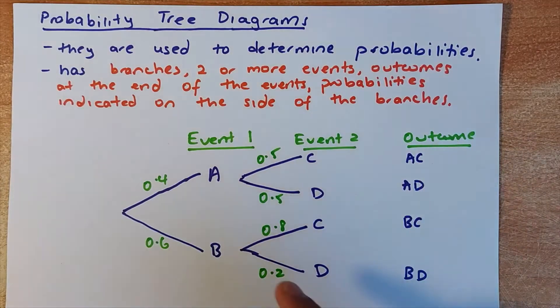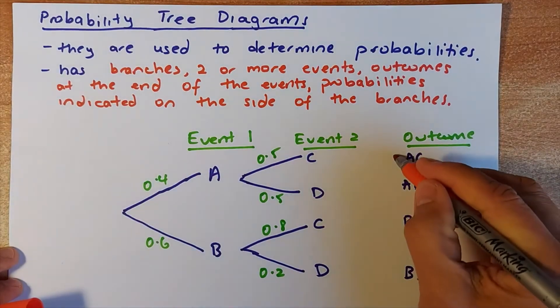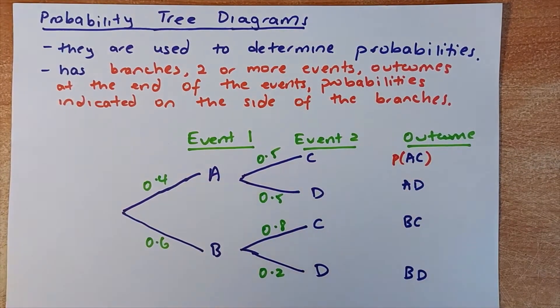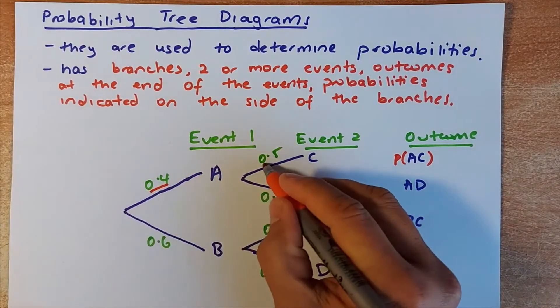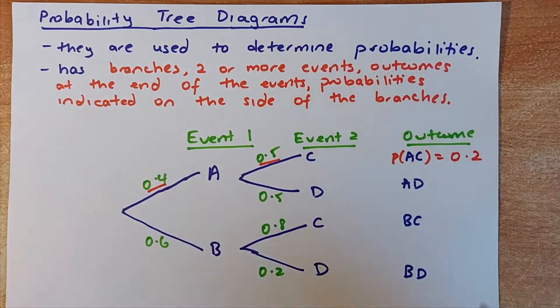The next rule we need to know is how to calculate the outcome. So for outcome AC, to calculate the probability, we put P probability of AC. To do that, we multiply the numbers that lead to the branch. 0.4 times 0.5, that will give you 0.2.